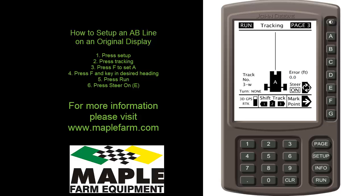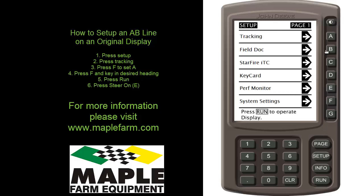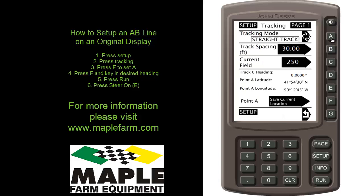On our original display we are on page 3, so if you aren't, press the page button until you see page 3 on the top. Then we will press setup tracking and make sure that our tracking mode is set to straight track.